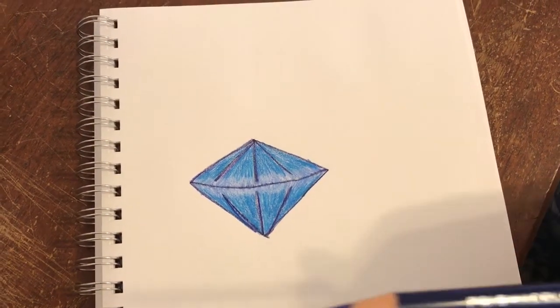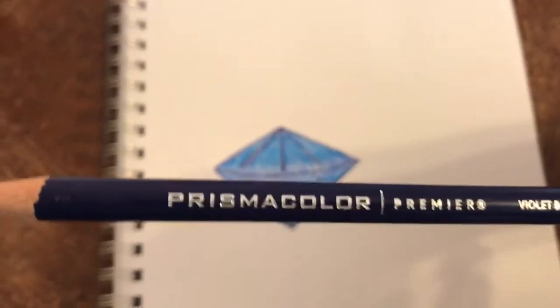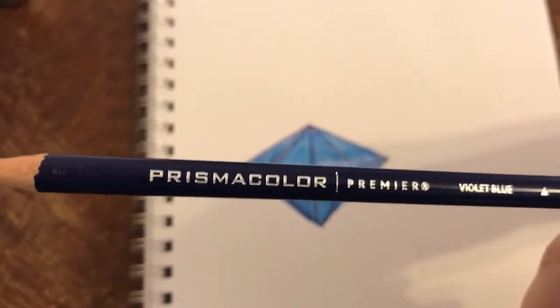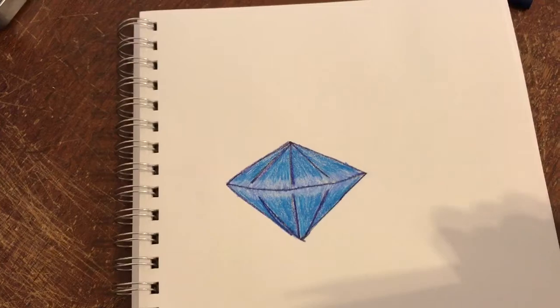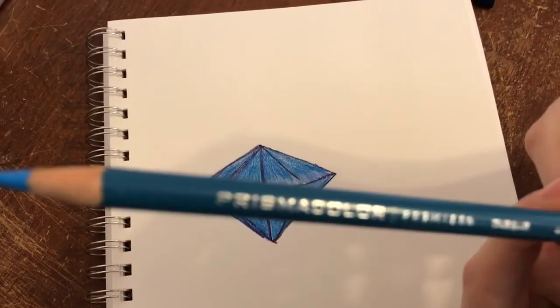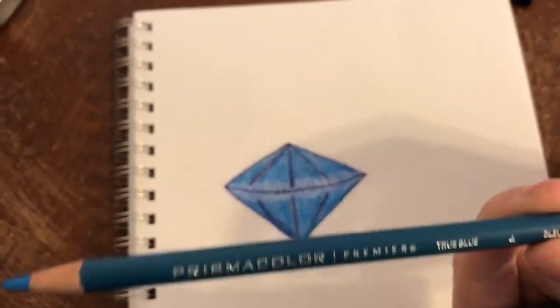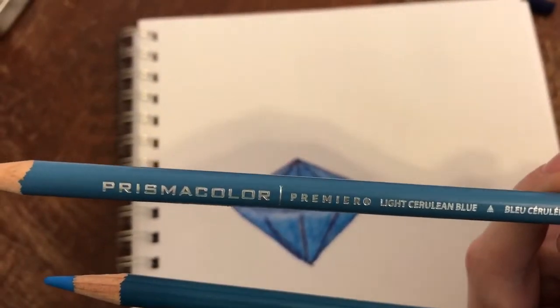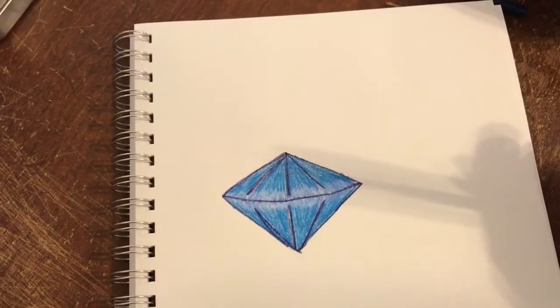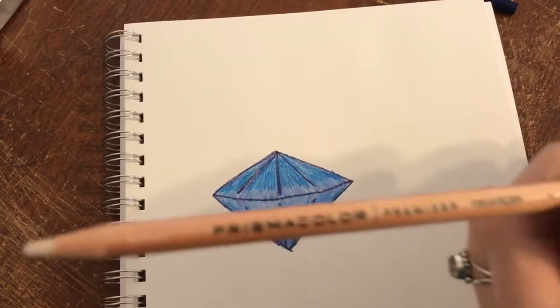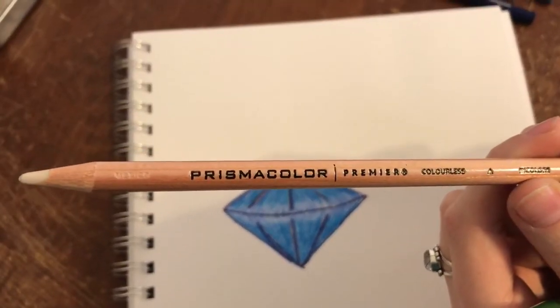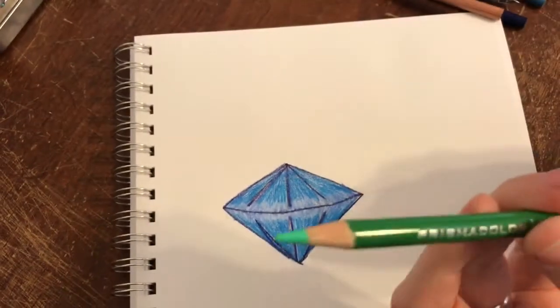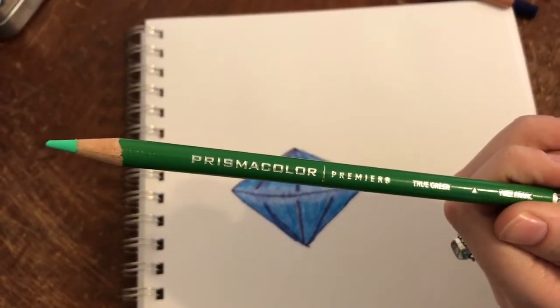So the ones that we'll need is the violet blue color for the outline, and then true blue, and the light cerulean blue for the inside, as you can see right there. And then you can use the Prismacolor blender pencil to shade everything in, but if you don't have that, you can just use a light green pencil right here.